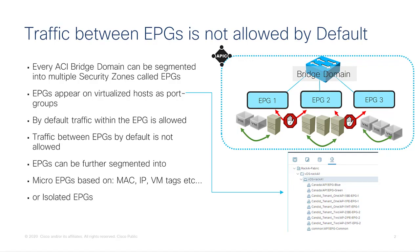Endpoint groups can be segmented further by creating micro-segmented EPGs, which are more granular EPGs where traffic is assigned based on MAC address, IP address, VM tags, and so on. Even though the default for an EPG is to allow all traffic, you can also create EPGs where traffic is not allowed — these are called isolated EPGs. If you're familiar with private VLANs, this is very similar to that concept.